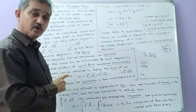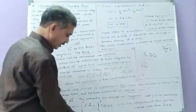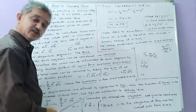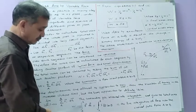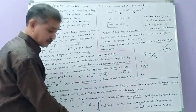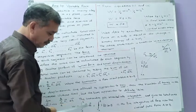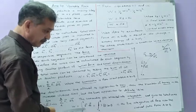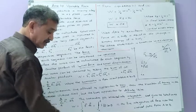For constant force, the work done was simply the scalar product of F⃗ and d⃗. For variable force, we use W = ∫ F⃗ · dr⃗, the integration from initial point A to final point B along the path of motion. This is called the line integration of force over the curved path from A to B.